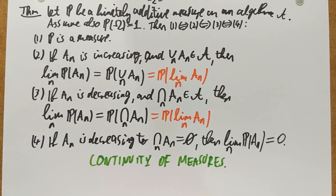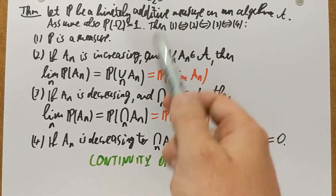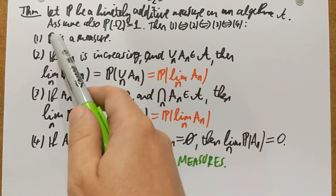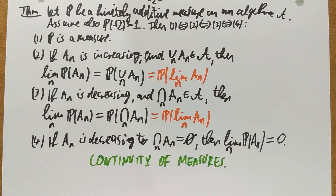This is referred to as continuity of measures. Essentially, it states that being a measure is equivalent to being able to swap limits with the measure. If you learned a little bit of analysis, you probably remember that continuous functions swap with limits — and here, measures also swap with limits.